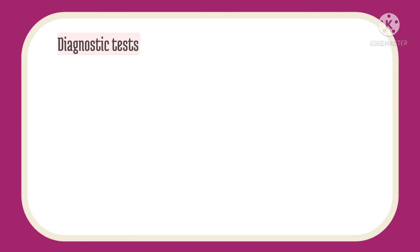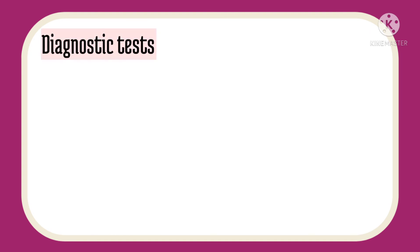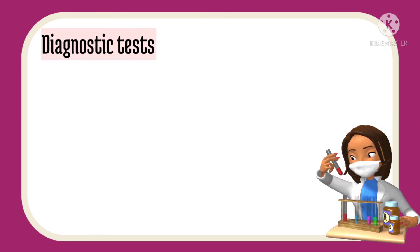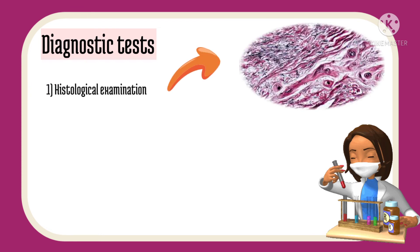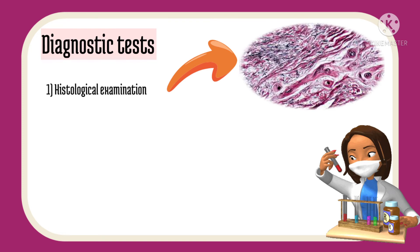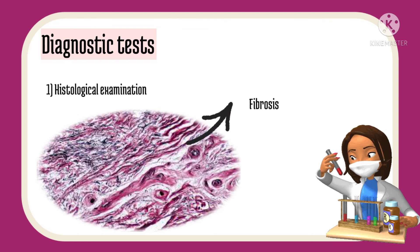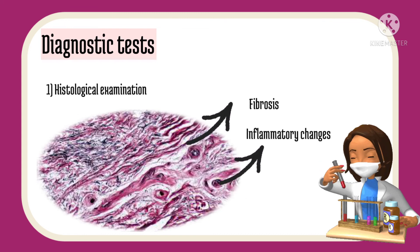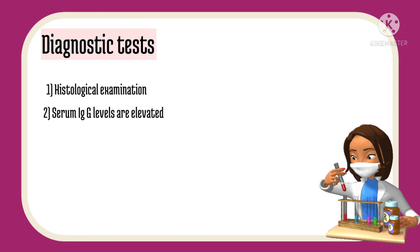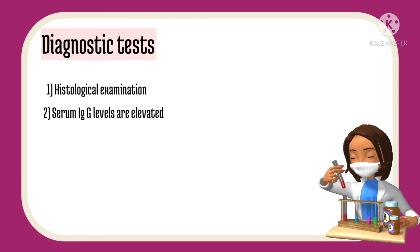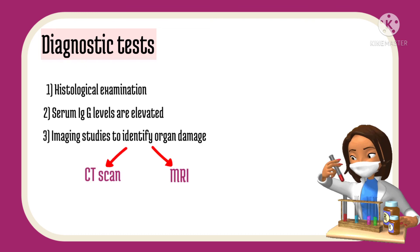The gold standard test for this disorder is the histological examination of tissue taken from the affected organ. On examination, you will see fibrosis and inflammatory changes in the tissue. Serum IgG4 levels must also be checked, which are usually found elevated in this condition. Imaging tests like CT scan and MRI may be done to assess for organ involvement.